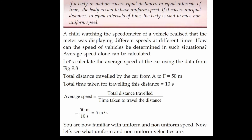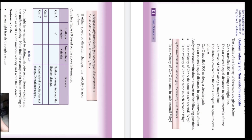You are now familiar with uniform and non-uniform speed. Let us see what uniform and non-uniform velocity is. The details of the journey of three cars are given. Car A travelled 500 meters along a straight line. Car B travelled 500 meters along a straight line, but the distance covered is unequal in equal intervals of time. Car C travelled 50 meters along a circular path, covering equal distance in equal intervals of time.